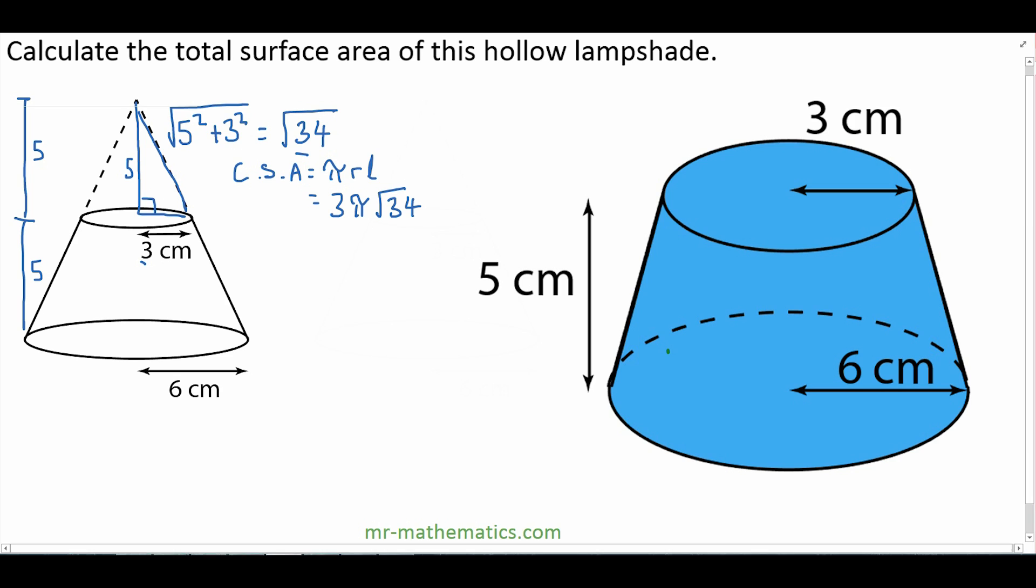Now we can work out the curved surface area of the entire cone. That perpendicular height would be 10 and the base radius would be 6. So the length of the slant for the entire cone will be 10 squared plus 6 squared, which is square root of 136.